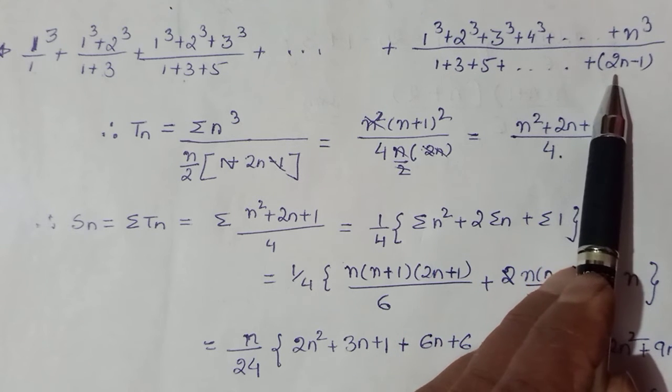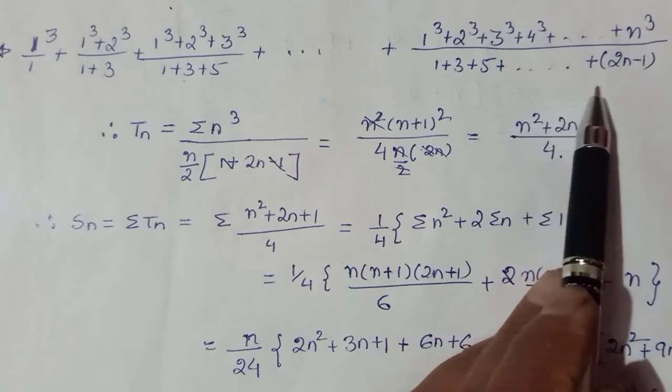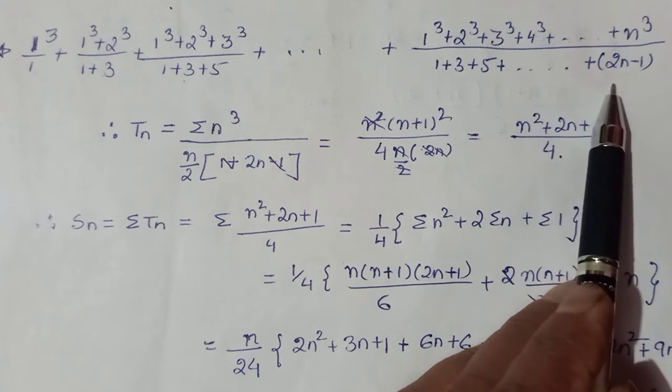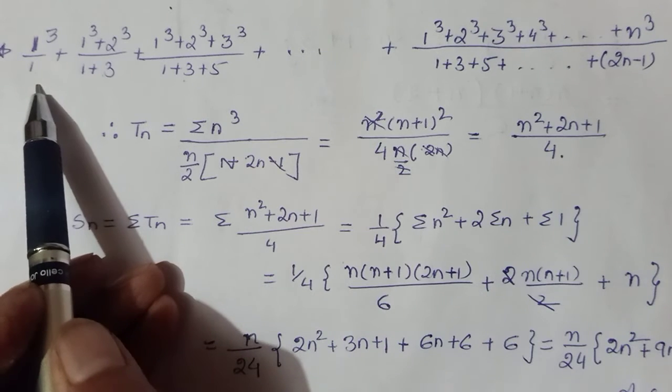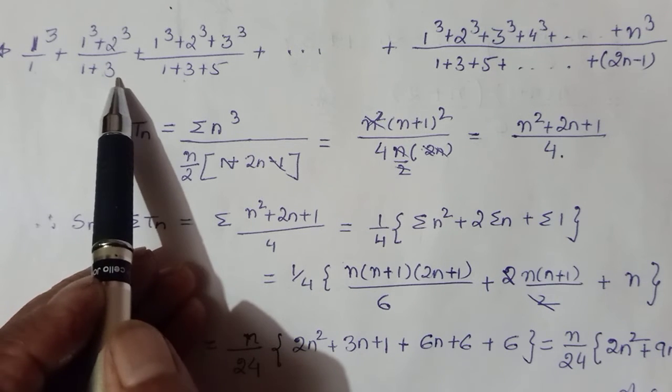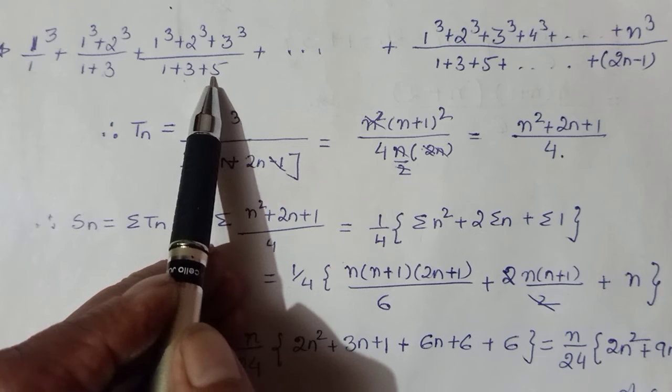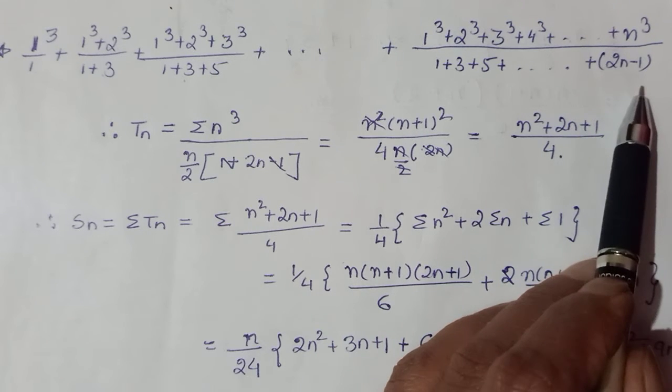So total there will be n terms kyunki n terms tha, first term mein one number ka tha and second mein two terms tha, three terms takka sum tha to n terms takka sum ho ga.